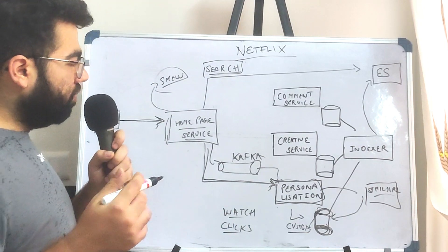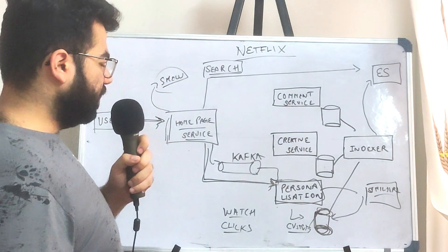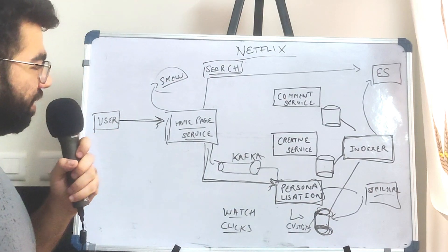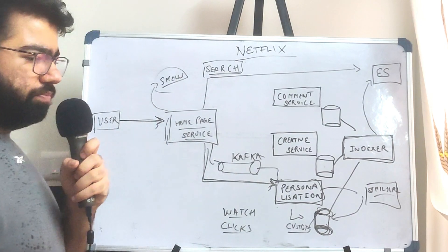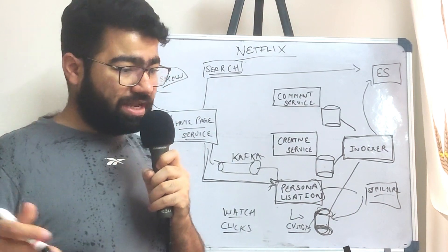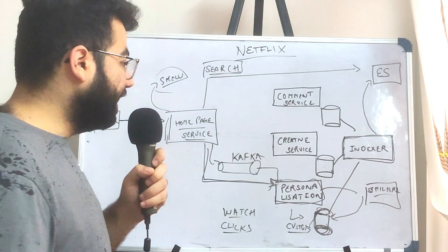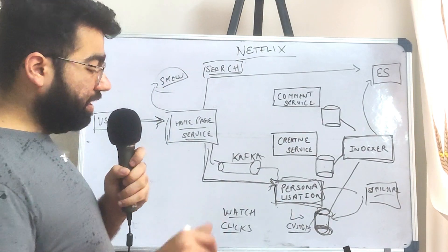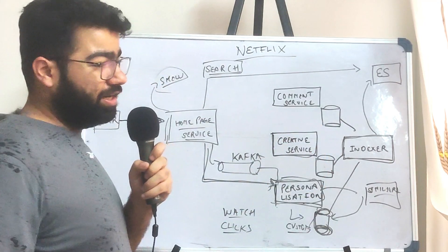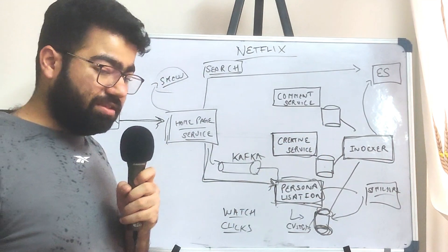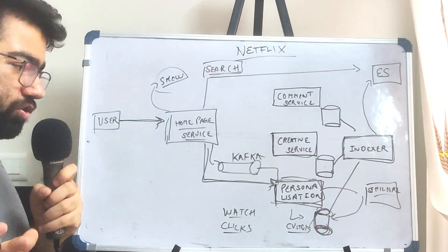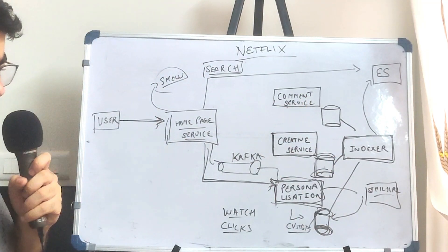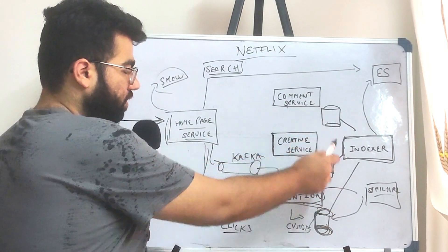To support search, we have something called an indexer. The search results depend on a lot of different things. For example, a show may have many episodes and there might be some episodes you like and some you don't, and that data is stored in the personalization service. There is also a creative service which stores what content is available in a particular country, the name of the show, its characters, its cast. Additionally there is a comment service which stores any comments on a particular video.